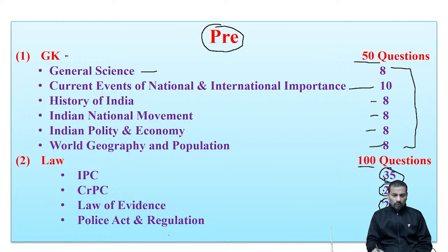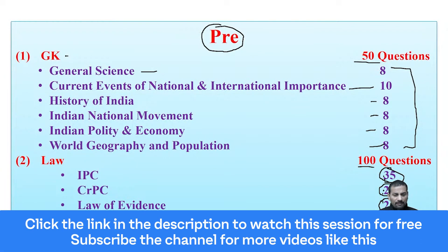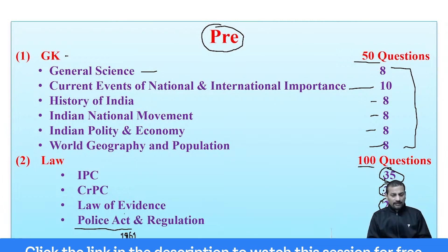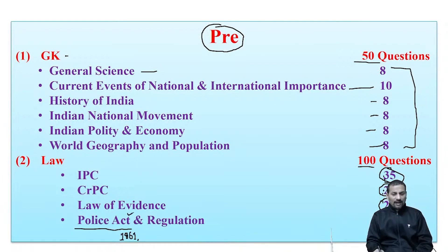15 questions come from these two: Police Act 1861, which is a Central Law, and in Uttarakhand, as you have studied, there is the Uttarakhand Police Act 2007, and U.P. Police Regulation.